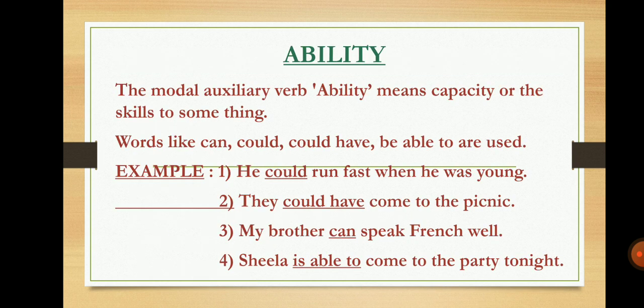The first type is ability. The modal auxiliary verb 'ability' means the capacity or skill to do something. Words like can, could, be able to, and could have are used. For example: 'He could run fast when he was young' — here 'could' shows ability. 'They could have come to the picnic' — 'could have' shows ability. 'My brother can speak French well' — 'can' shows ability. 'Sheila is able to come to the party tonight' — 'is able to' shows ability.